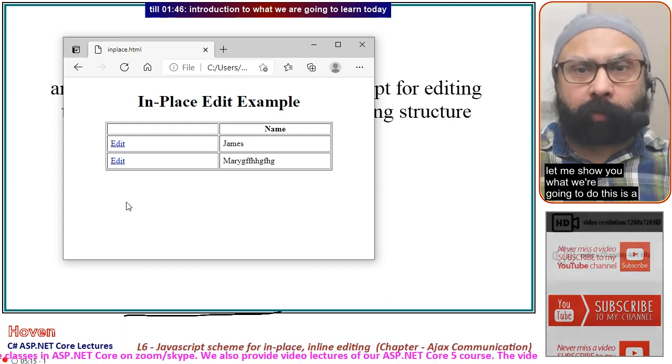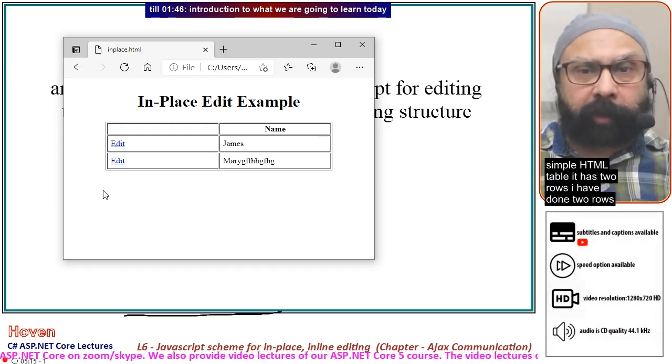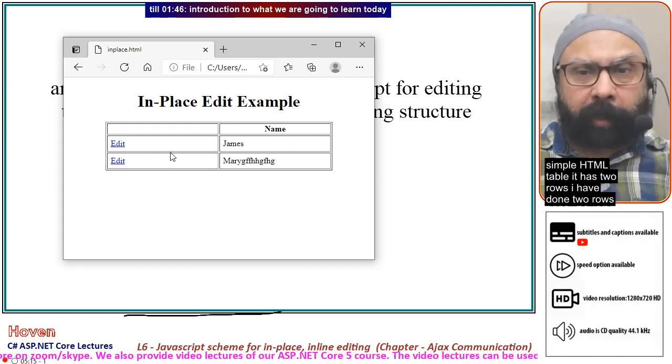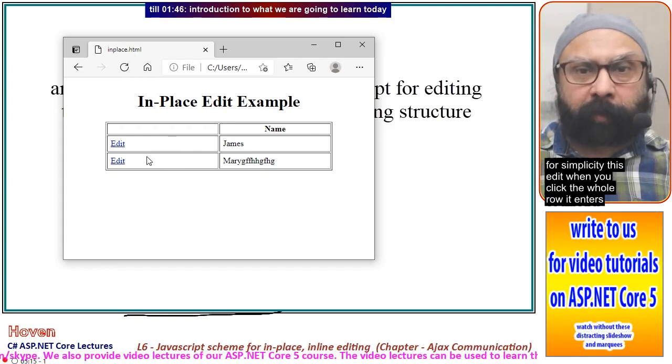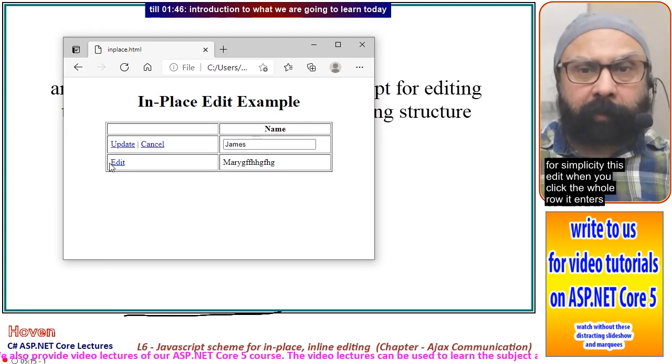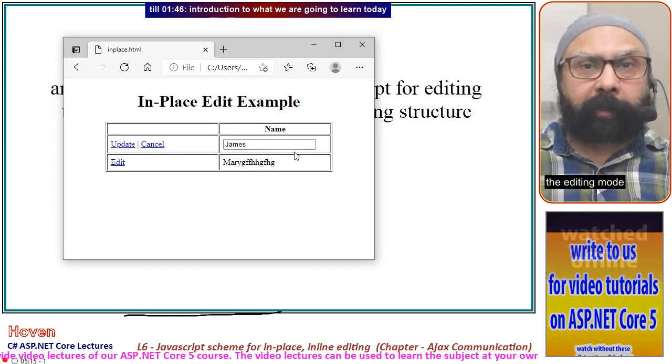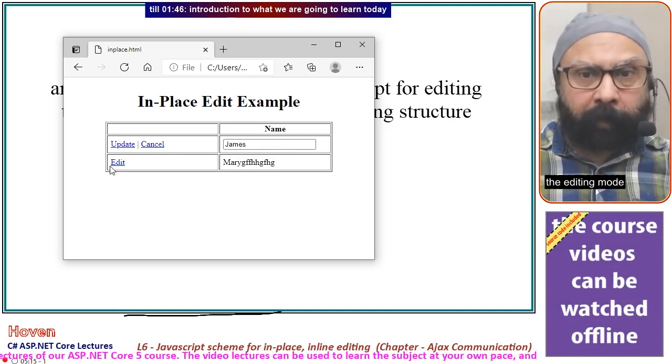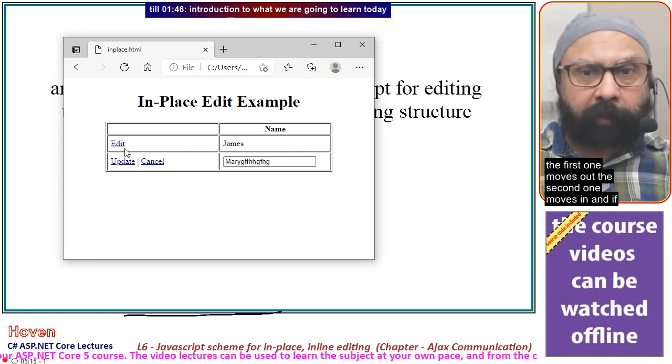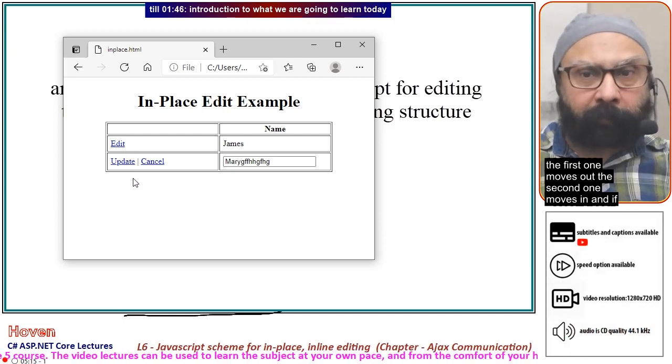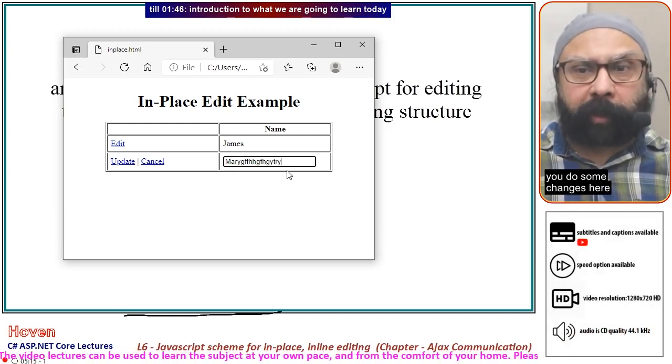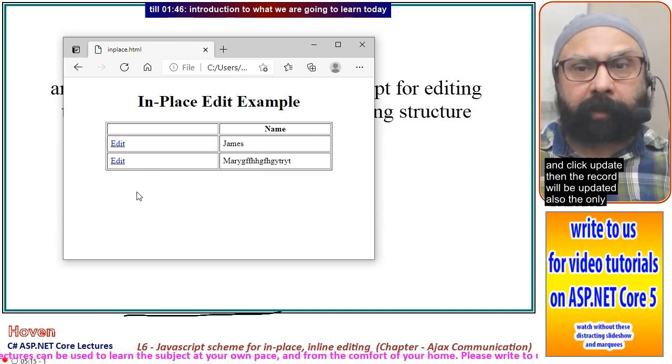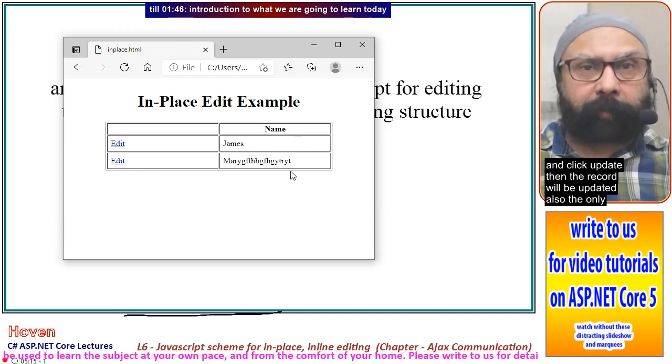Let me show you what we are going to do. This is a simple HTML table with two rows for simplicity. When you click edit, the whole row enters editing mode. Click another one, the first moves out and the second moves in. If you make changes and click update, the record will be updated.